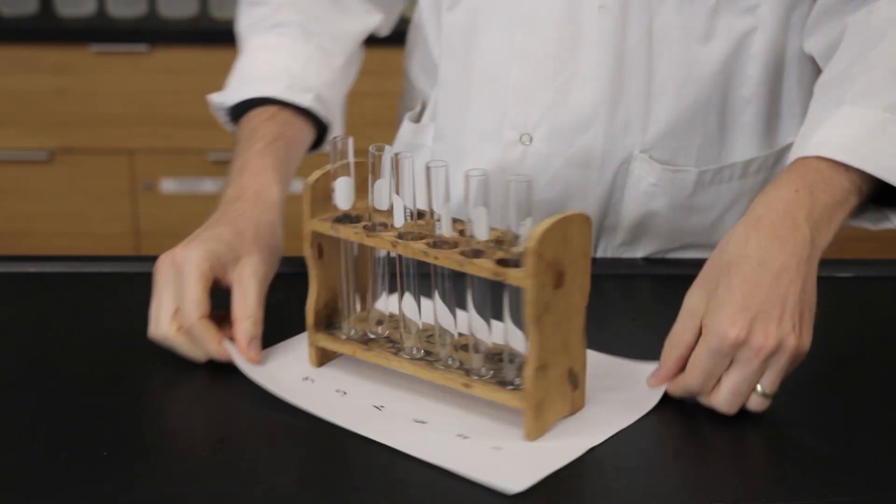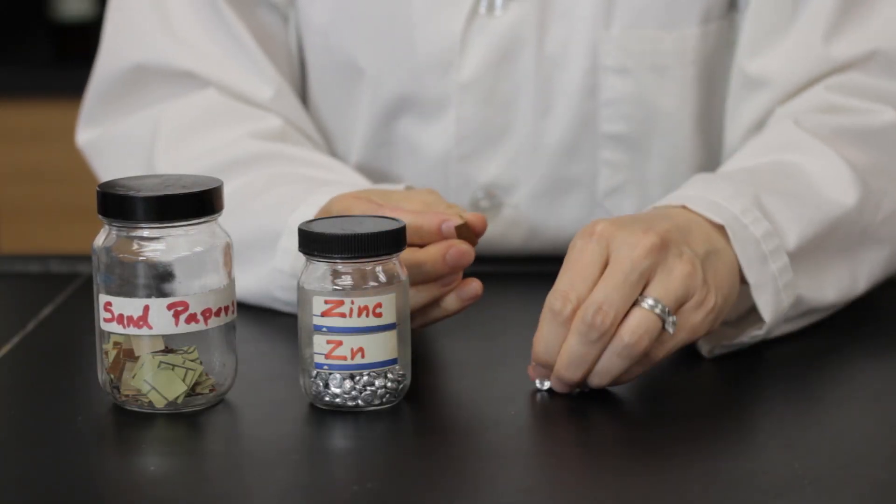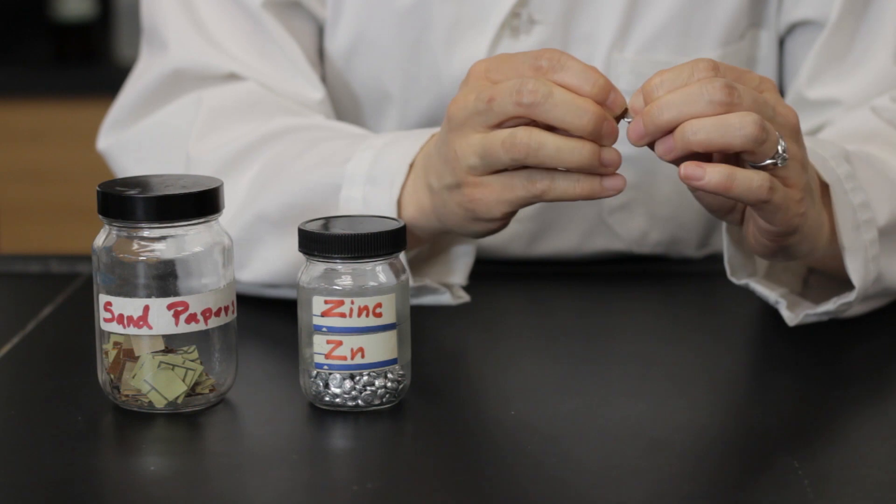Take one test tube at a time from your test tube rack to the reagent bench. Use sandpaper and scrub the metal.